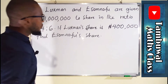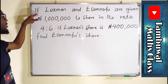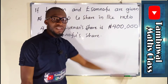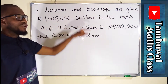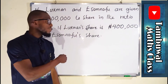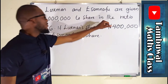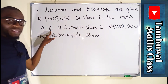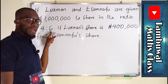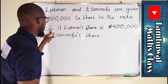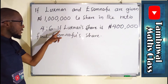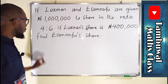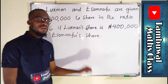It's a ratio and sharing question, you can see. If Lokman and Isomnofu are given 1 million Naira to share — this is from the question wall — in the ratio 4 to 6, definitely Isomnofu's share must be higher than mine. But the question says if Lokman's share is 400,000, we are asked to find Isomnofu's share.